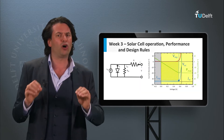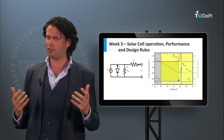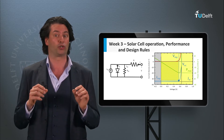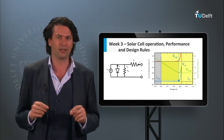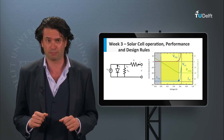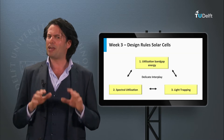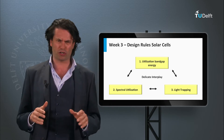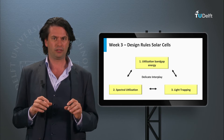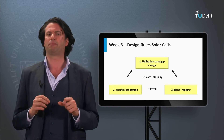In week 3 we saw that the behavior of solar cells can be explained in terms of the external parameters: open-circuit voltage, short-circuit current density, fill factor, maximum power point, and conversion efficiency. In addition, we have discussed the design rules of solar cells and categorized them in terms of spectral utilization, utilization of the band gap energy and light management.